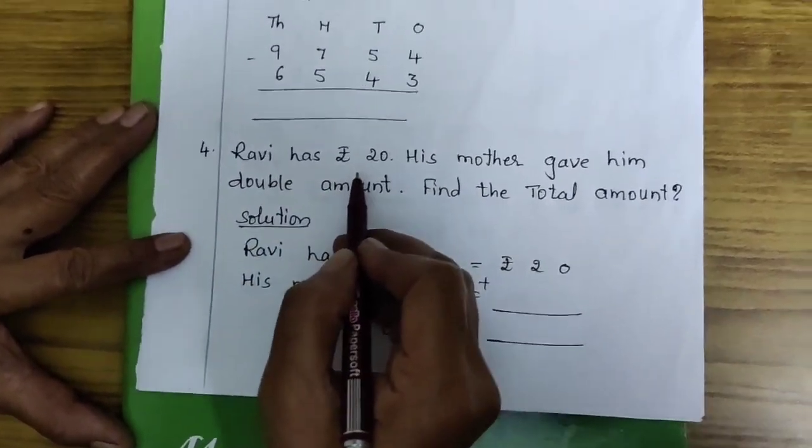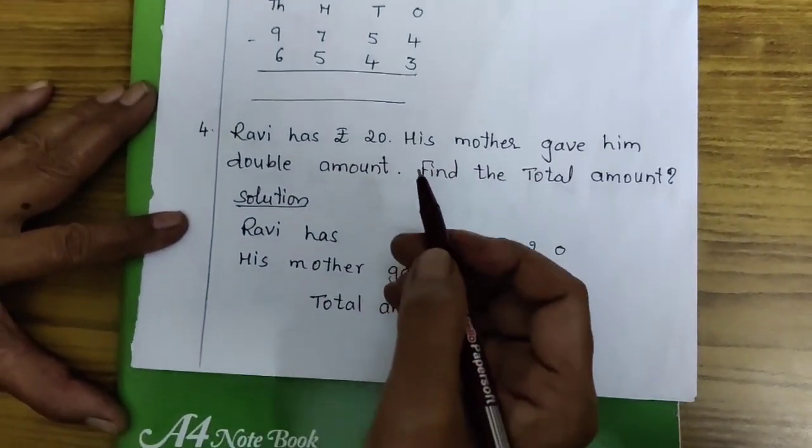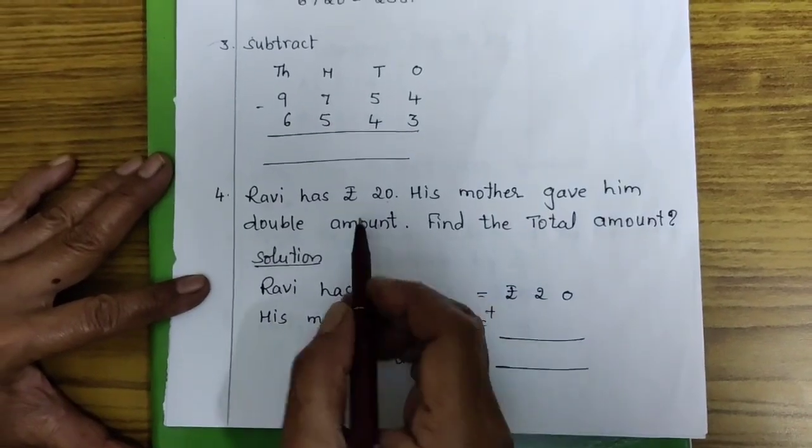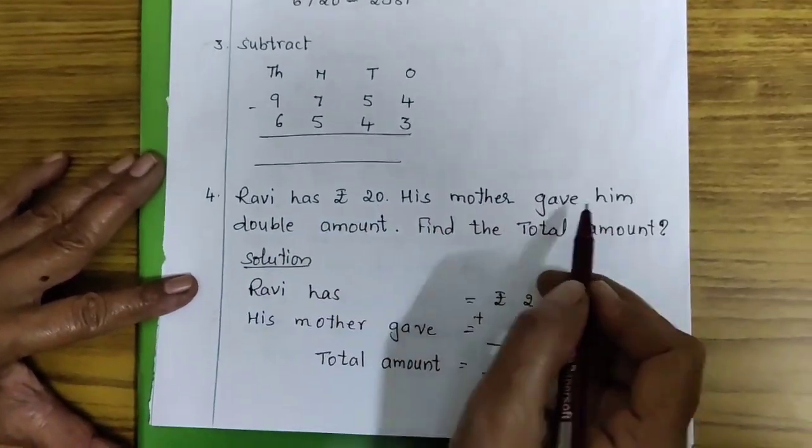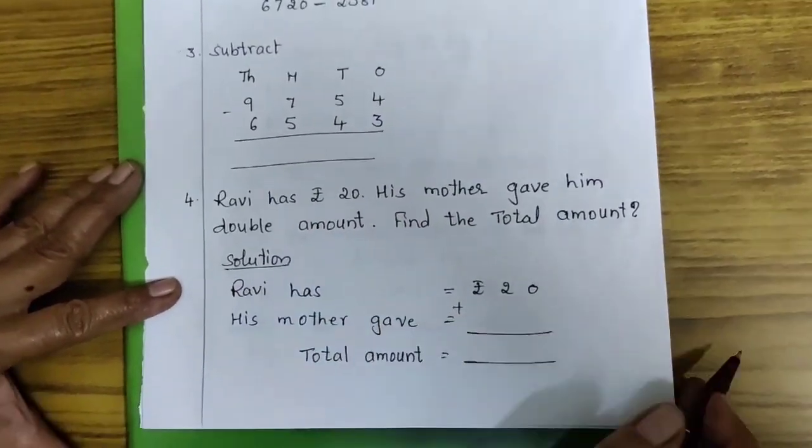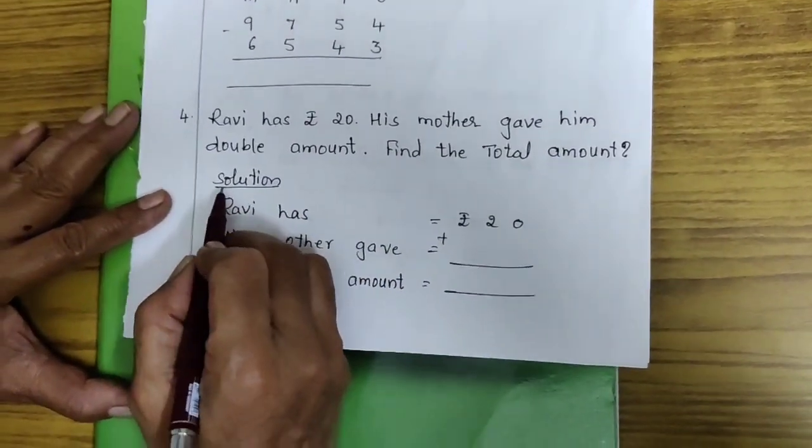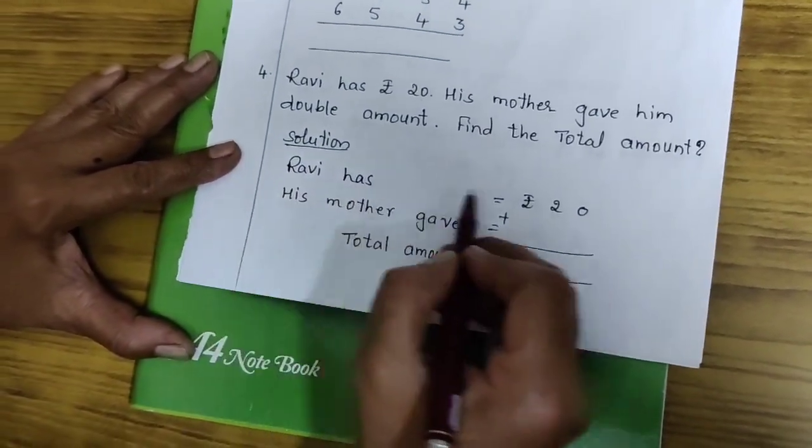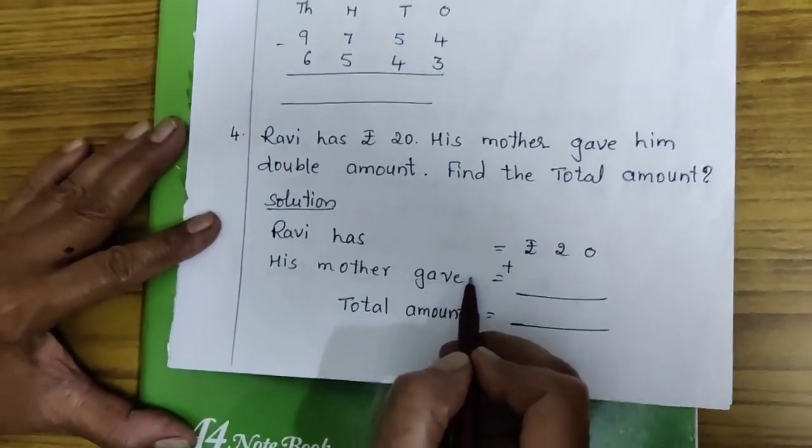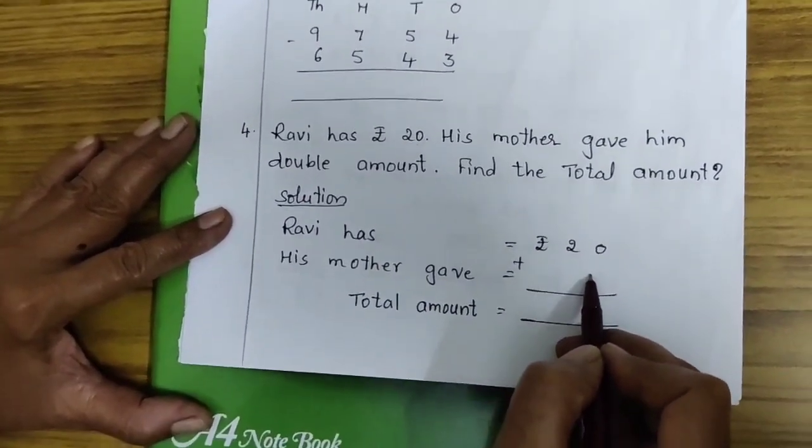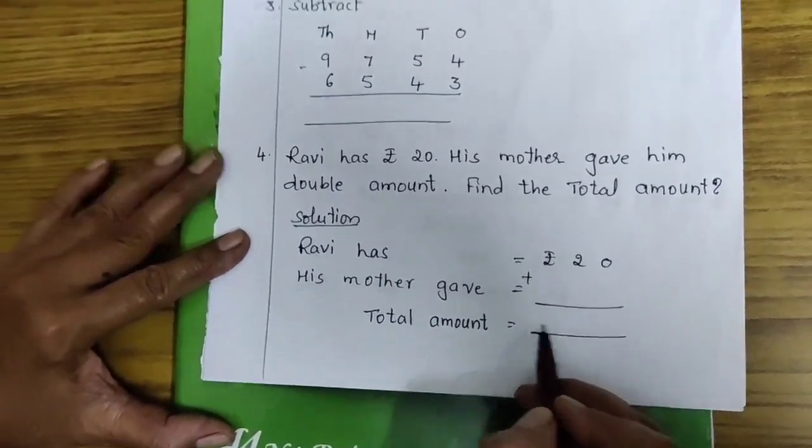Suppose, if you have Rs. 10. If your mother gave double amount, means how much? It will be 20. So, here Ravi has 20. His mother gave him double amount, means how much? That you have to find. Then, solution, Ravi has Rs. 20. His mother gave double amount. How much? That you have to write here. And find the total amount.